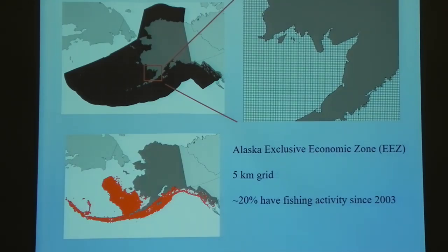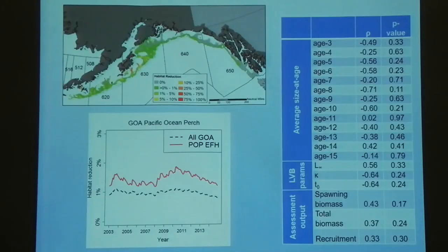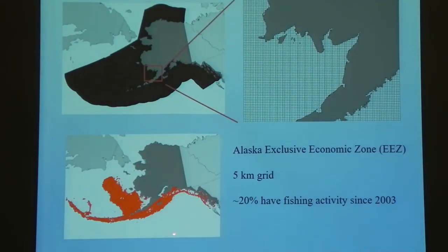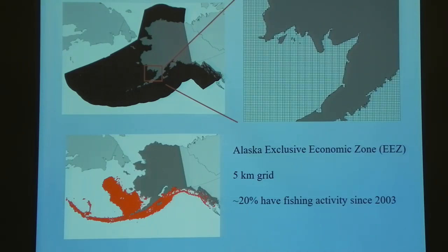I'll also point out this contour here — that's the edge of the continental shelf where water gets much deeper. For all intents and purposes, fishing happens at depths less than 1,000 meters. So when I show you the results in the next slide, it's essentially cropping the EEZ to everything at less than 1,000 meter depth.